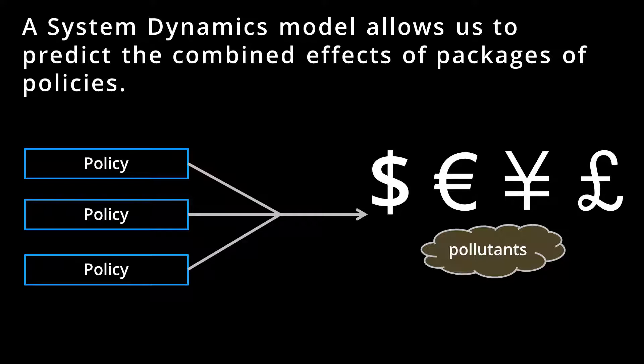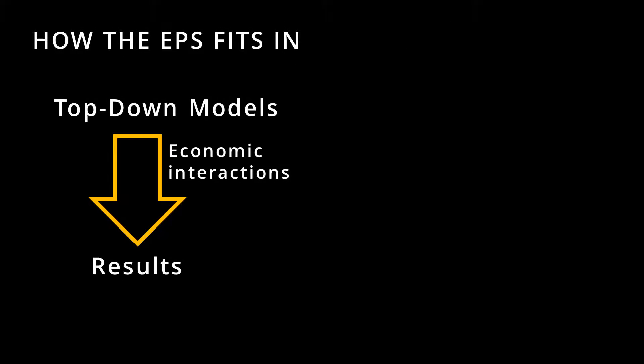The EPS is a system dynamics model. That means it assumes the system is ever-changing and dynamic, not in equilibrium. Those of you who are familiar with computer models may have heard of top-down models such as partial equilibrium or computable general equilibrium models. These models often hail from the world of economics and include a variety of assumptions. For instance, they may assume that actors in the economy are rational and have complete knowledge of the goods and services available to them.